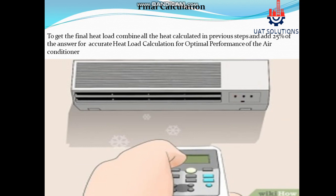Final calculation: to get the final heat load, combine all the heat values calculated in the previous steps, then add 25 percent of that total for an accurate heat load calculation and optimal performance of the air conditioner.